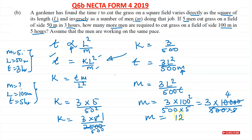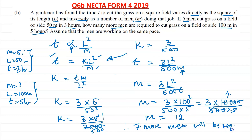But what you've been asked is how many more men will be required to do this job. We know the first job needed 5 men, and now they need 12 men. So how many more men? They need 12 take away 5, which is 7. Therefore, 7 more men will be required, because the difference between 12 and 5 gives you 7. And that's the answer for 6B.